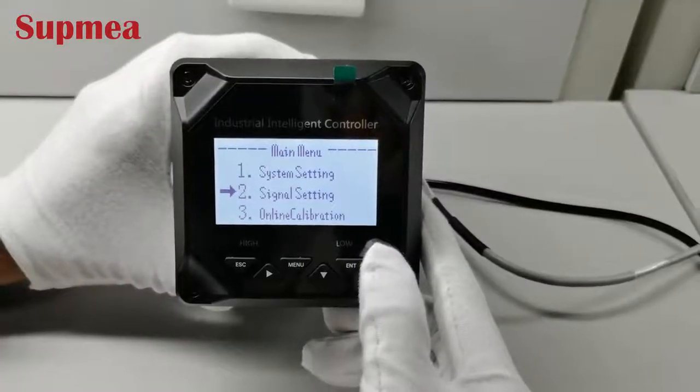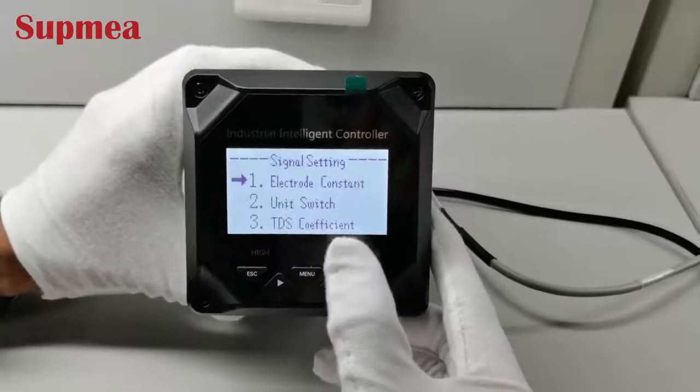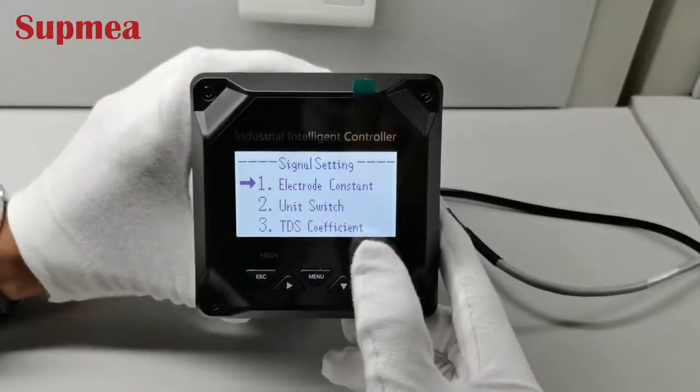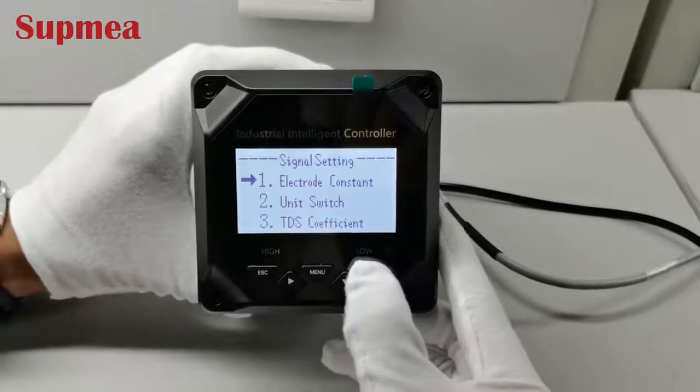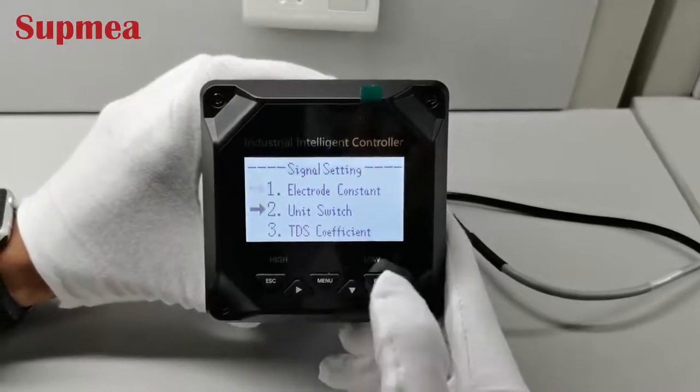Here are some features of our controller. On signal settings, you can see the electrode constant. We need to change the value of the sensor. And then, we have the unit switch.